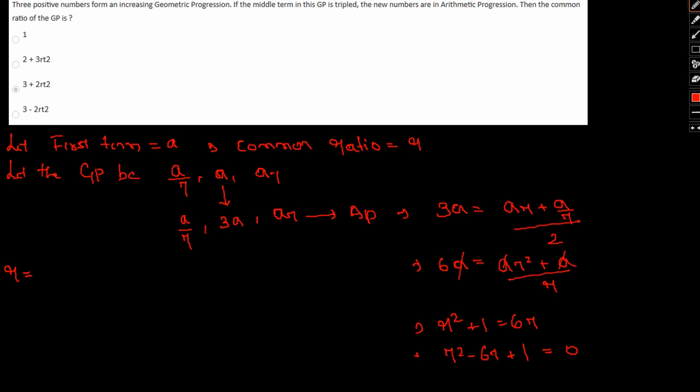R can be actually written as (6 ± √(36 - 4))/2. That is (6 ± √32)/2. So this can be further written as (6 ± 4√2)/2 or 3 ± 2√2.